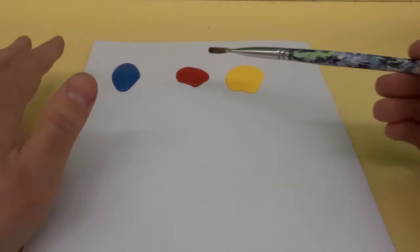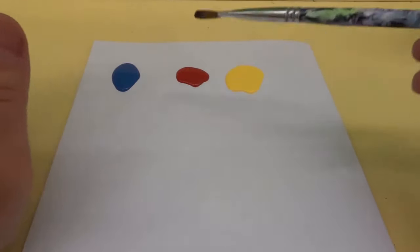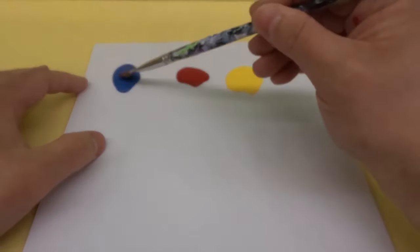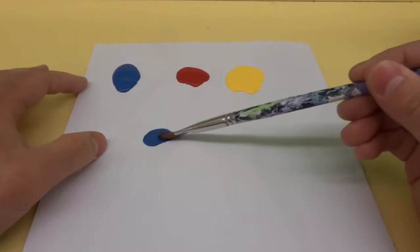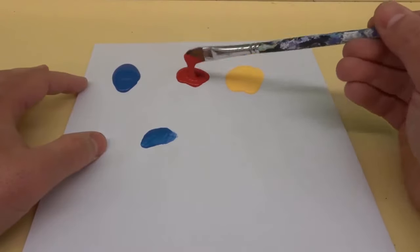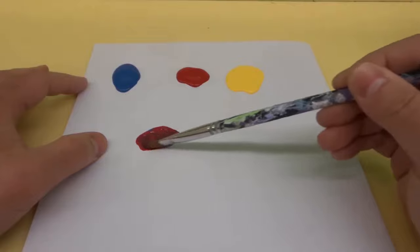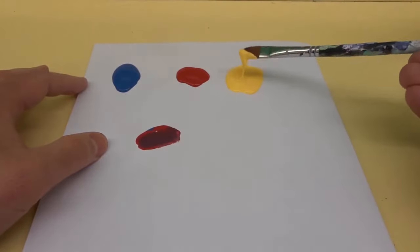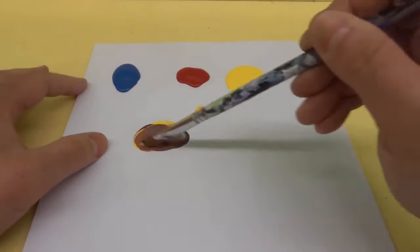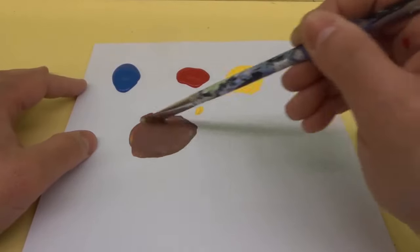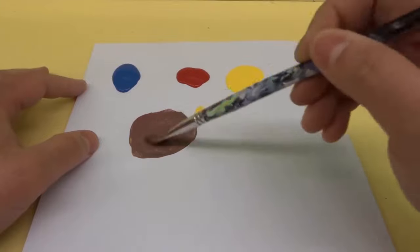We're going to start by making a brown color. To get brown, we take a little bit of blue, a little bit of red, and a little bit of yellow. If we mix those three colors together, we get a nice brown tone. You can see right here we have a brown tone. Let's mix it up really nicely.